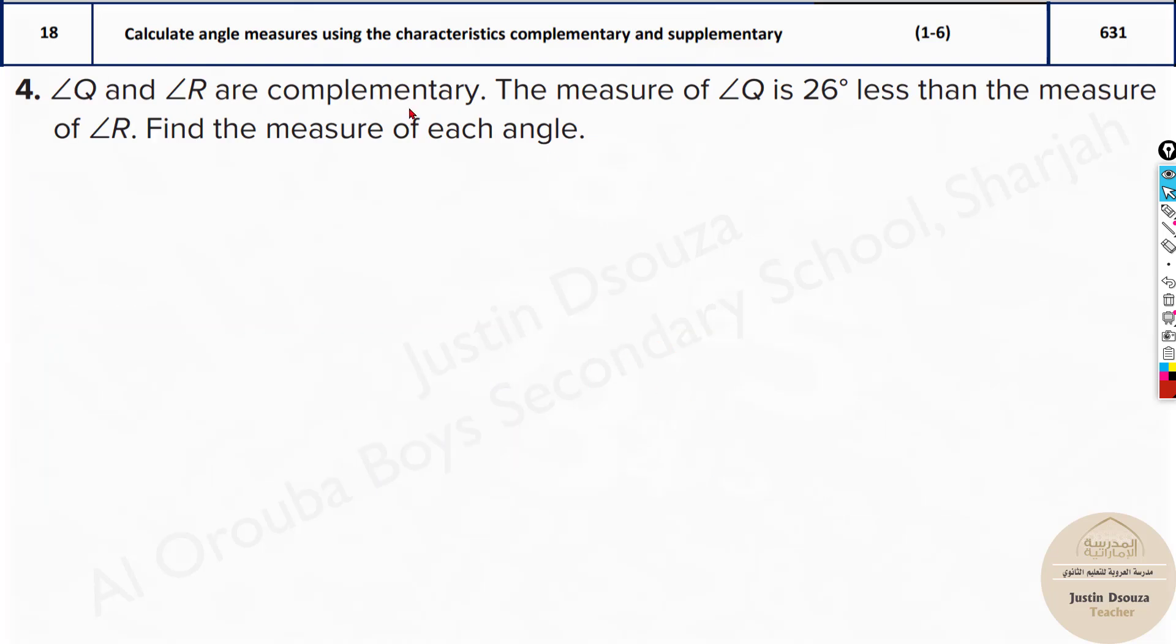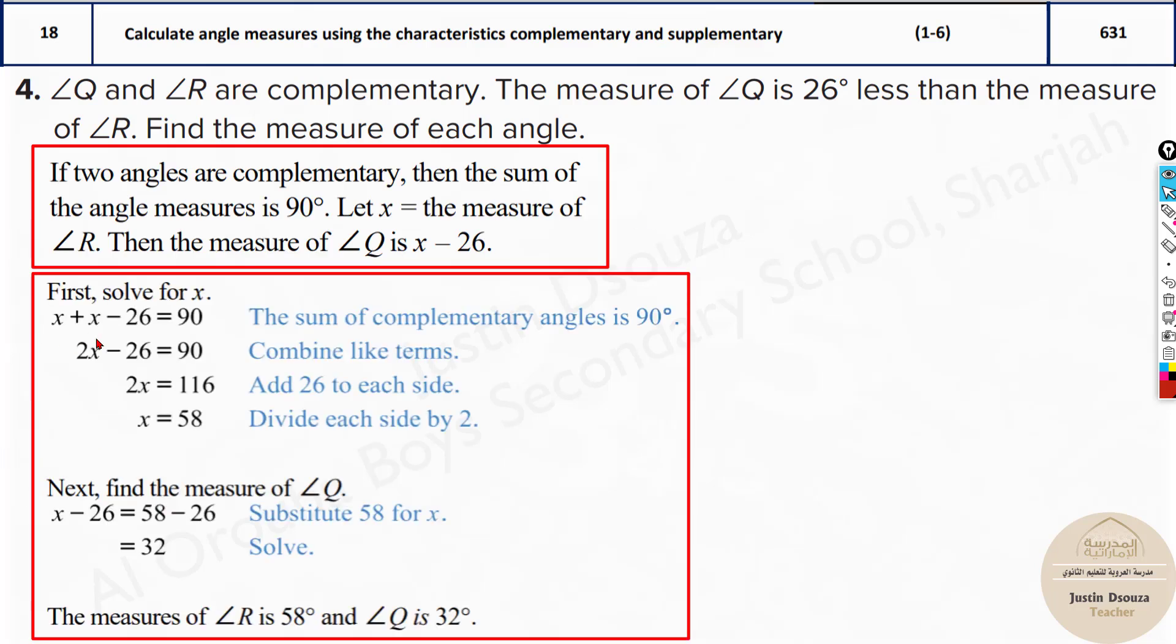Please do these by yourselves. Complementary means 90 degrees. Here it's just like what we did a while ago. You can see all the methods are shown here.